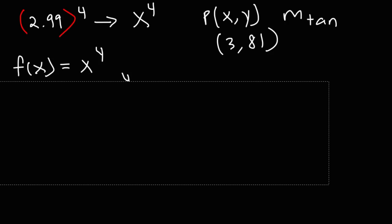The next thing we need to do is calculate the slope of the tangent line. And in order to do that we need to find the first derivative of the function known as f prime of x.